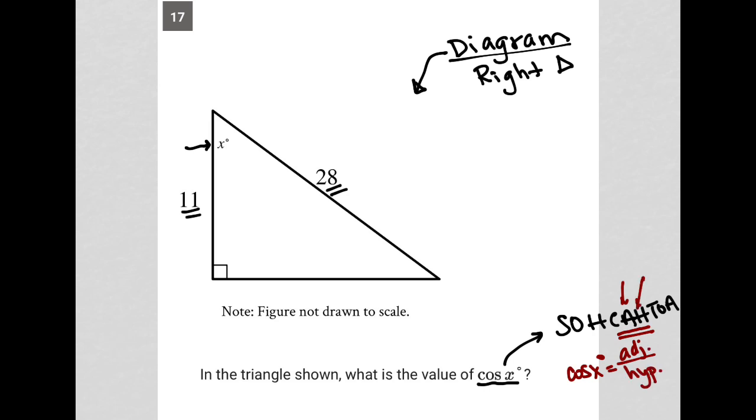So for short, I put ADJ for adjacent in the numerator, and for short, I put HYP for hypotenuse in the denominator. So again, focusing our attention on angle x, what is the adjacent side? Well, it's the side right next to it, okay? That's not the hypotenuse. So the side next to it that's not the hypotenuse is 11, and the hypotenuse is 28.